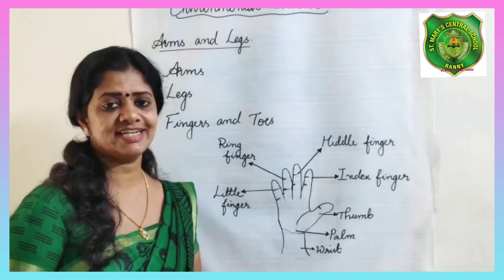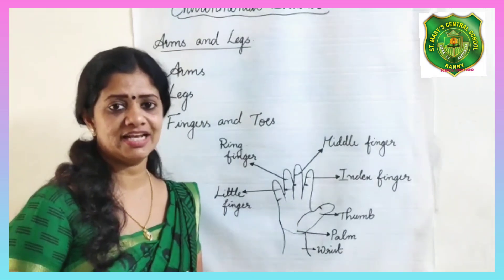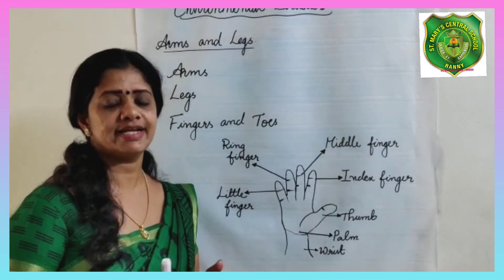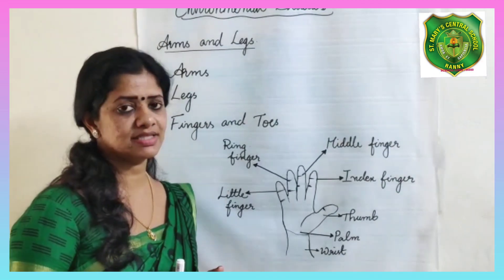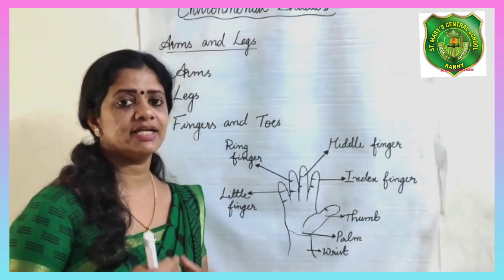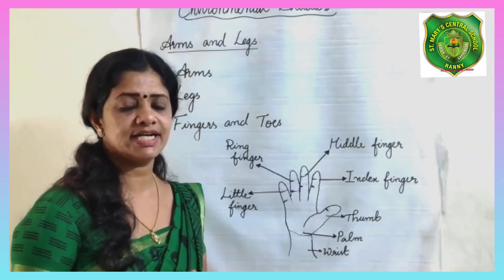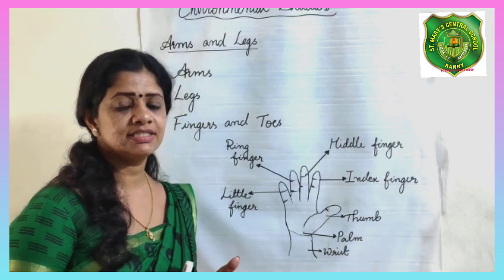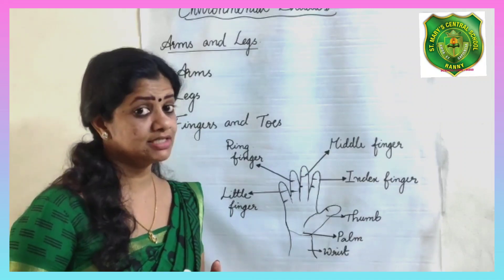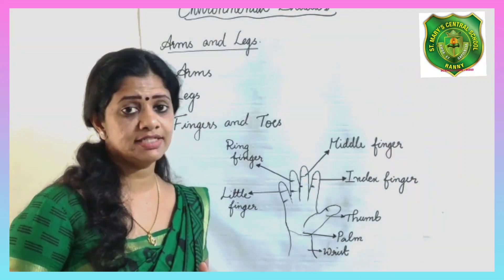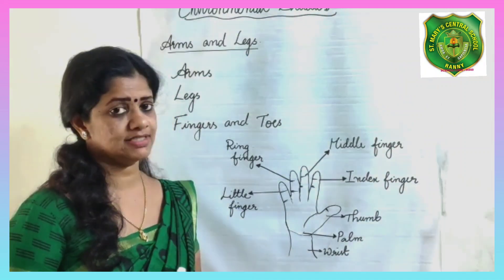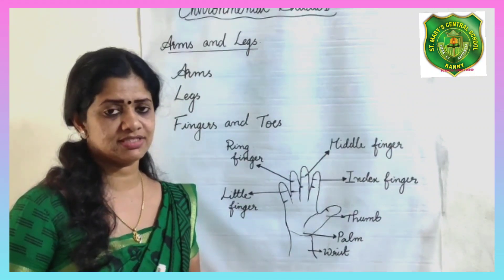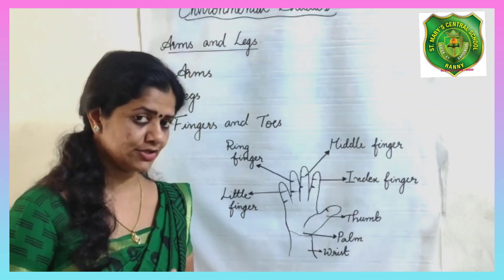So children, we learned about organs, sense organs and their functions, external organs, and the parts: head, trunk, and arms and legs. Please learn up to this. Thank you.